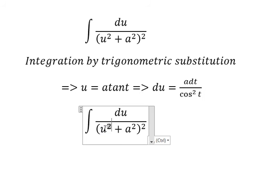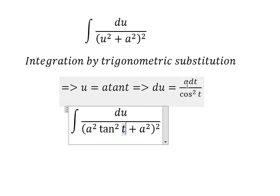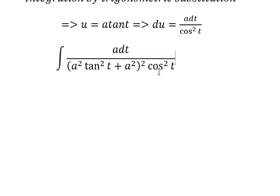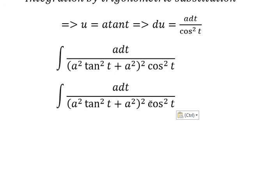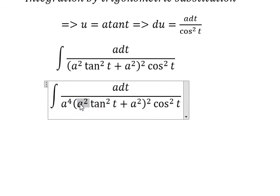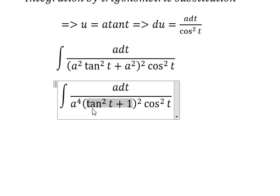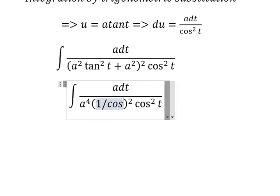So we get a squared times tan squared t. du will change to a dt over cos squared t. We put a squared outside, so we get a to the power of 4. Then 1 plus tan squared t gives us 1 over cos squared t.